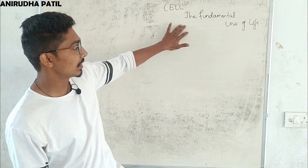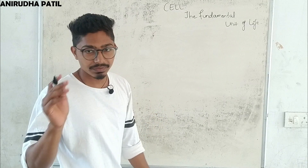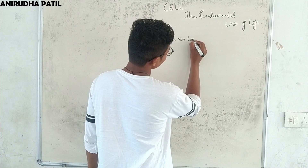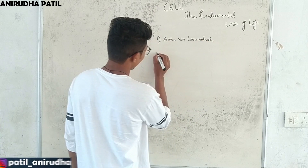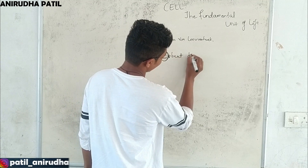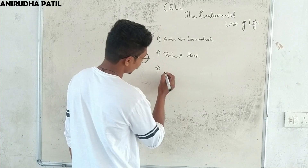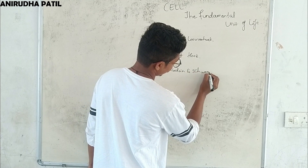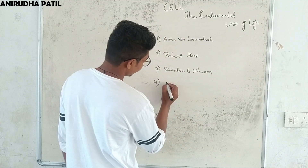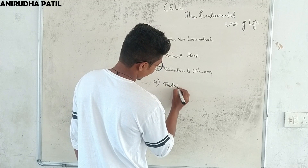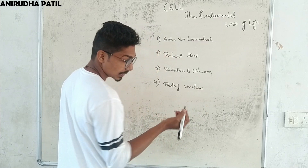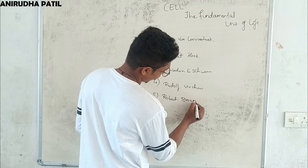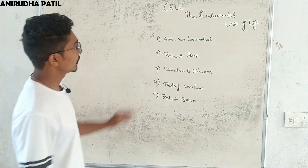Hello guys, welcome to biology class. Today's topic is 'Cell: The Fundamental Unit of Life.' Before going further, remember these five names: Anton van Leeuwenhoek, Robert Hooke, Schleiden and Schwann, Rudolf Virchow, and Robert Brown. These are five personalities you should remember in the topic of cell biology.